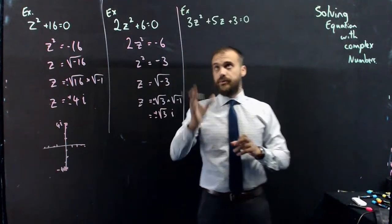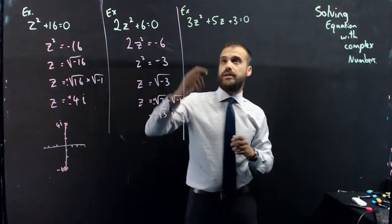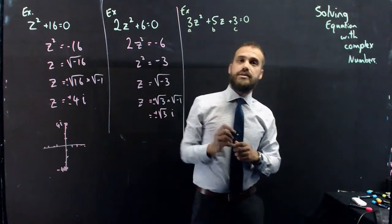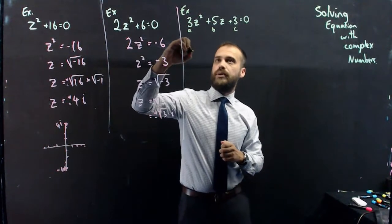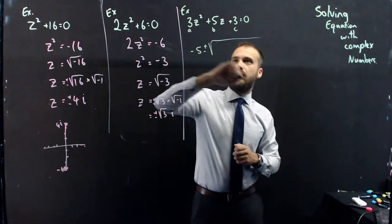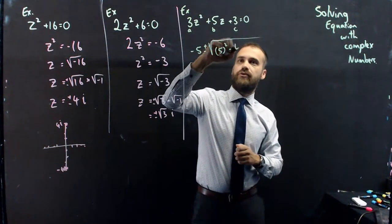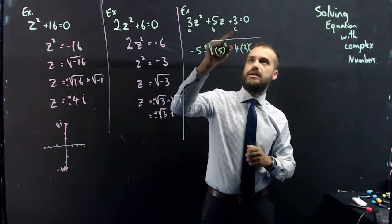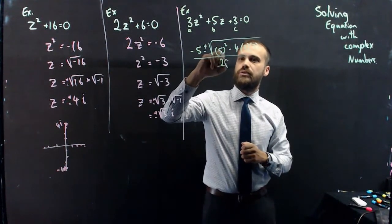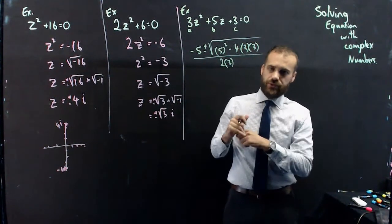So a little more work to do in this example. 3z squared plus 5z plus 3 equals 0. I'm just going to use my quadratic formula here. So this is our a value. This is our b value. And this is our c value. We have negative b plus or minus the square root of b squared minus 4ac all over 2a. All right. And from there, we can just sort of do some numbers.